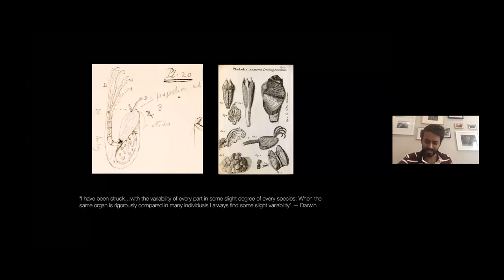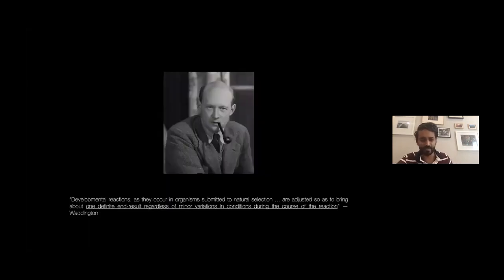At the time, the tradition was that there's an ideal barnacle, and all barnacles are trying to be that ideal perfect barnacle, but they just sort of fell short because life is tough. But Darwin was struck with the amount of variability, even very slight degrees, that you see in these barnacles. So variation is clearly important.